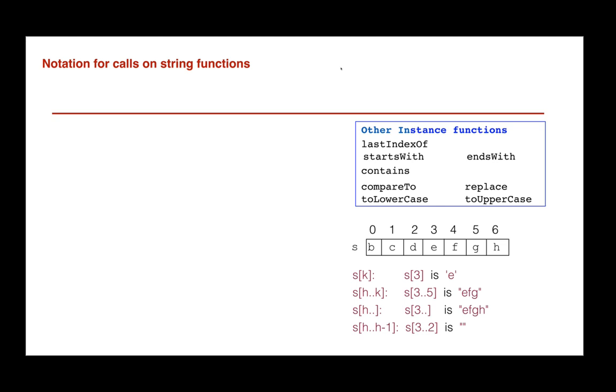For a string variable s, the syntax for a call on a function like length consists of the name s, a period, the function name, and the arguments of the call in parenthesis.